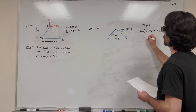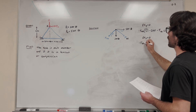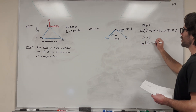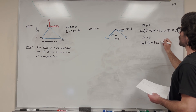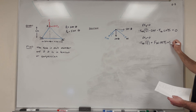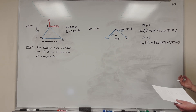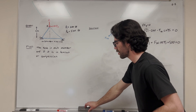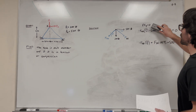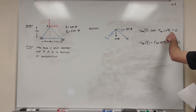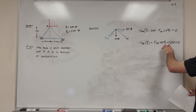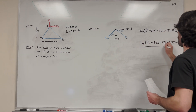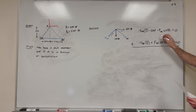Next, sum of forces in the X direction equals zero: negative force AB times 3/5, plus force BC times cosine 45, plus 500 equals zero. Now we have a system of two equations with two unknowns. Notice that sine 45 equals cosine 45, so the force BC terms will cancel if we add the two equations together.